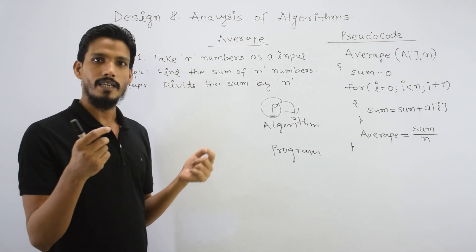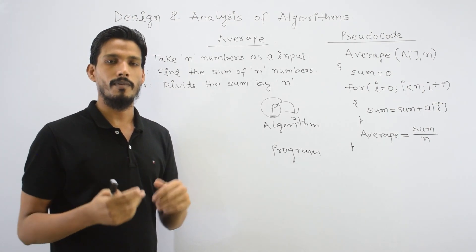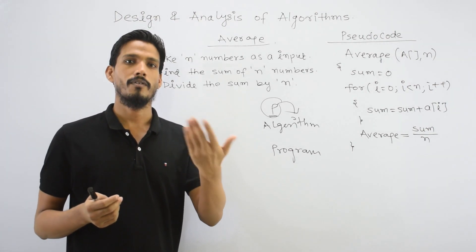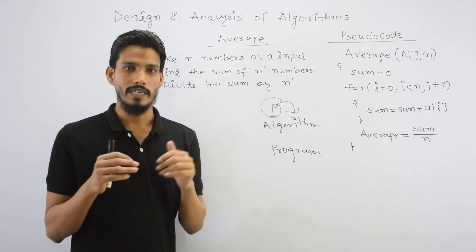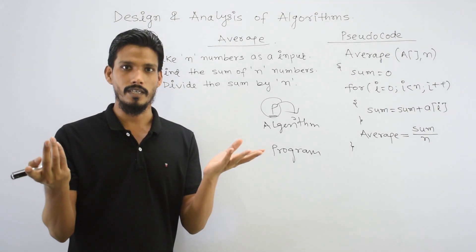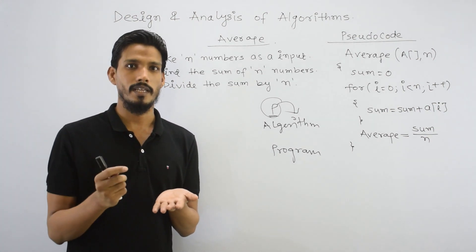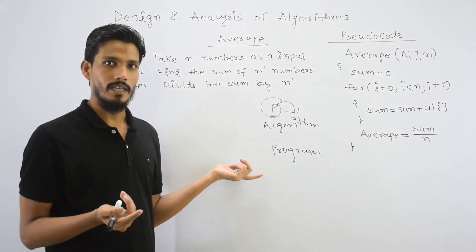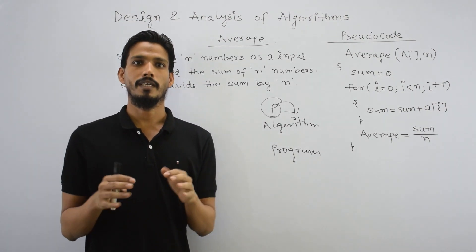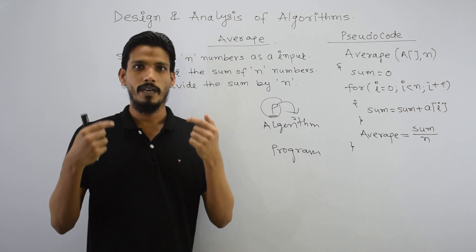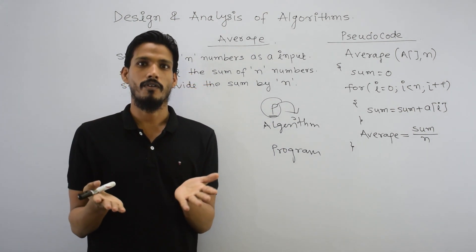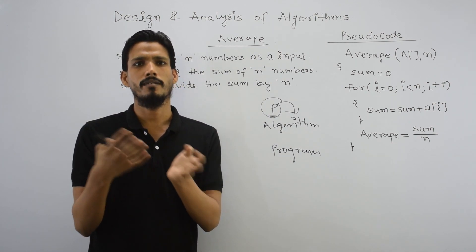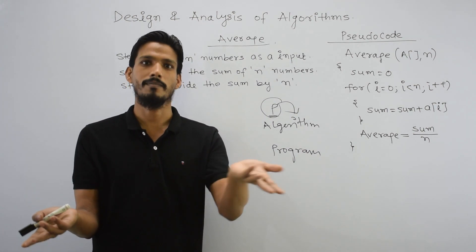If we talk about a C program in the first year, we don't write the algorithm in a written form directly. We write the algorithm in our mind and execute it. When you write a compiler, you can write the algorithm mentally. Logic means algorithm — algorithm means logic. If you know the logic of solving any problem, you can implement it in any programming language.